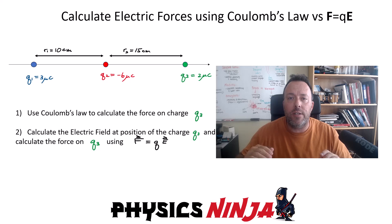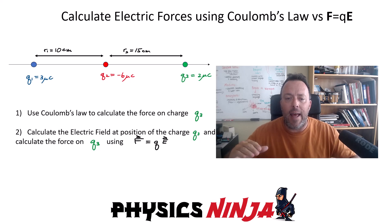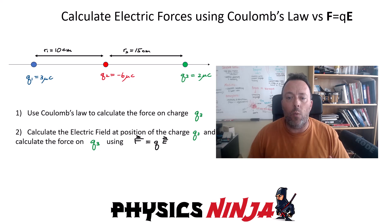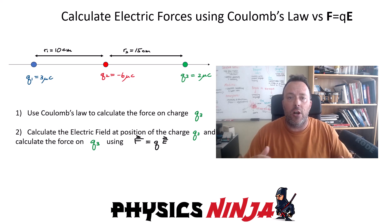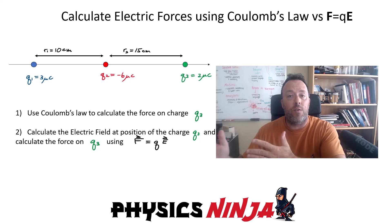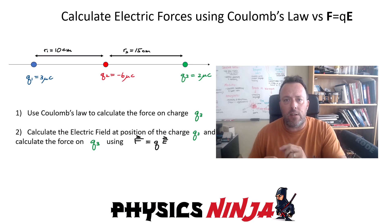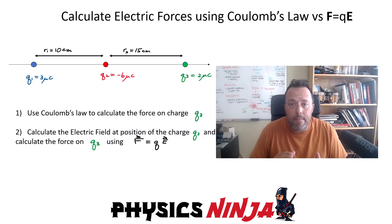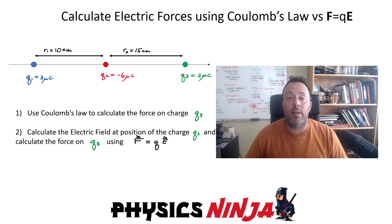I'm going to consider three point charges, keeping it a one-dimensional problem. The three point charges are on the x-axis, and my goal is to calculate the force on the green charge labeled Q3. It's going to interact with the other charges around it. In the first part we'll use Coulomb's law to add all forces on Q3. In the second part we'll calculate the electric field at Q3's position and multiply by Q3 to get the force. I'll show you they give the exact same result.